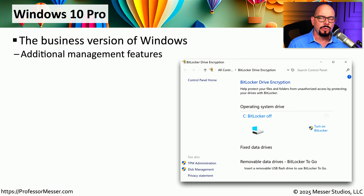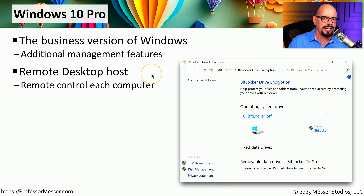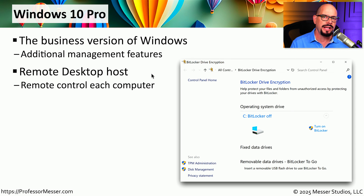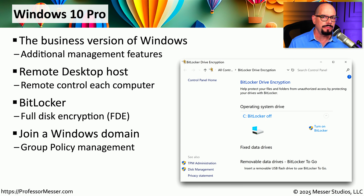Windows 10 Pro was built for the enterprise. If you're working in a business, you're probably using Windows 10 Pro. It includes features not available in Windows 10 Home, such as the ability to set up remote desktop as a host, allowing anyone to connect remotely and perform remote desktop functionality. Windows 10 Pro also includes full disk encryption, or FDE, through BitLocker. And if you need to join a Windows domain, you can do that in Windows 10 Pro, because Windows 10 Home does not support that feature.